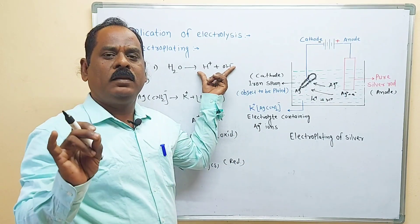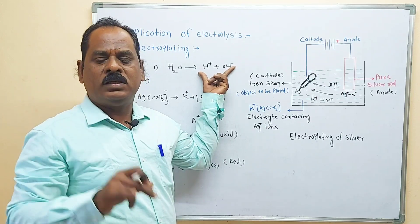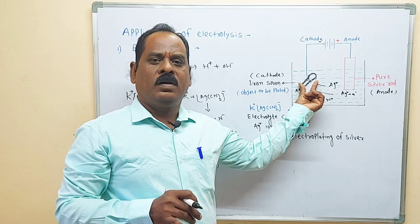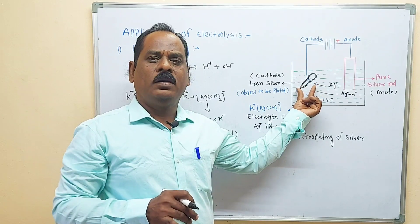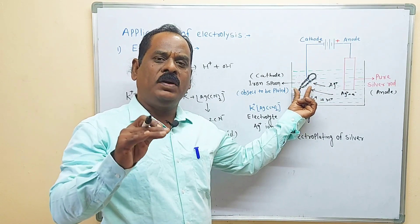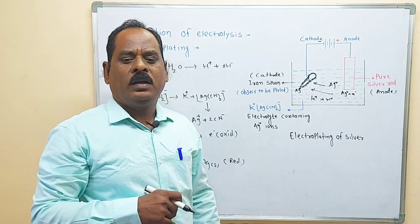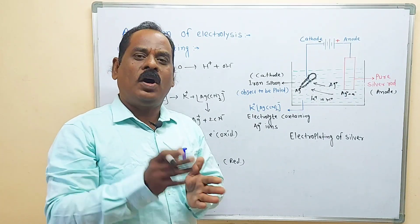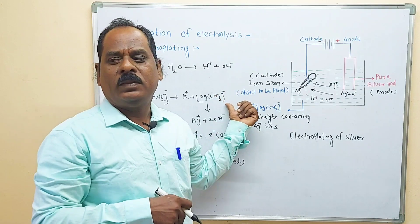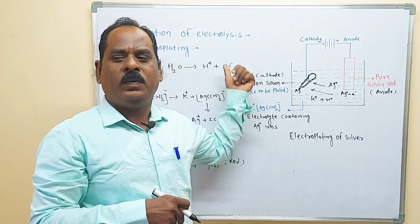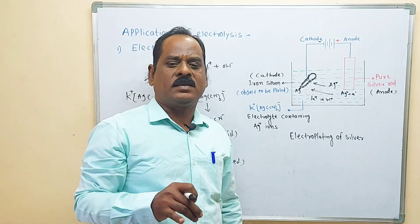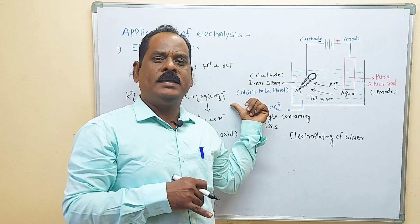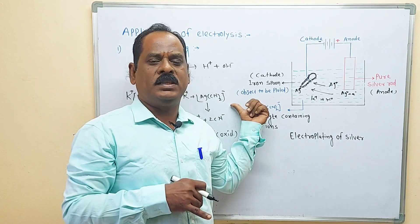The purposes of electroplating are: first, to prevent the corrosion of highly reactive metals; second, for making brightness or for the decoration with less reactive metals; third, to prevent the reactivity of highly reactive metals from the atmosphere; and fourth, for repairing purposes when cracks form on metals. Questions may be asked on this topic, and important notes will be given in the description box. Thank you.